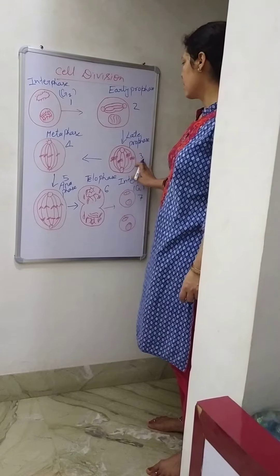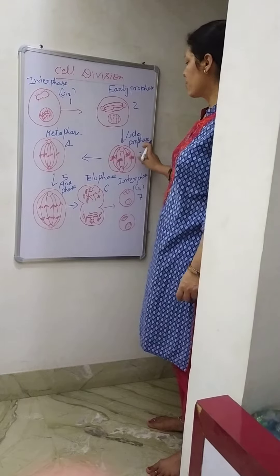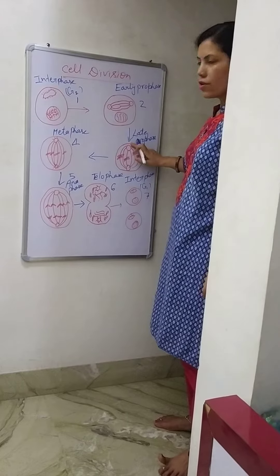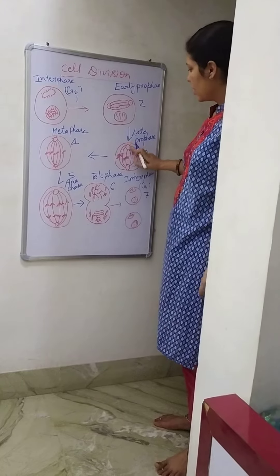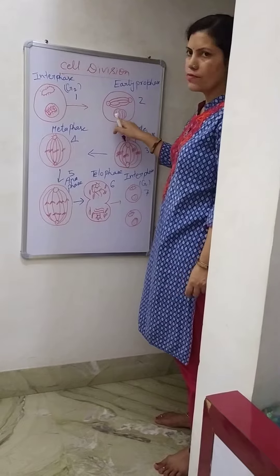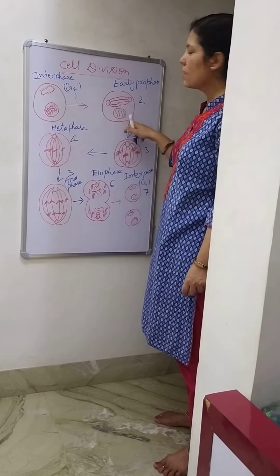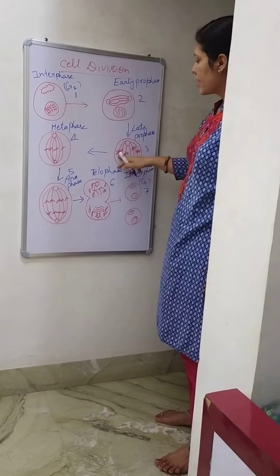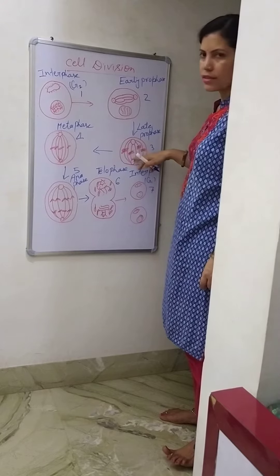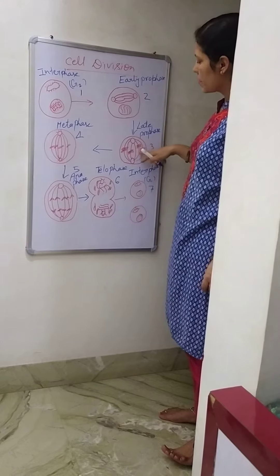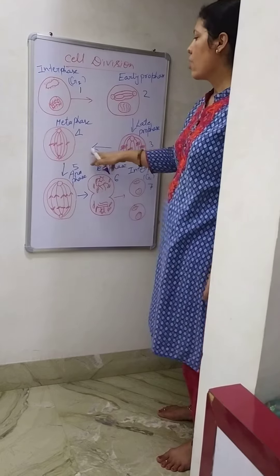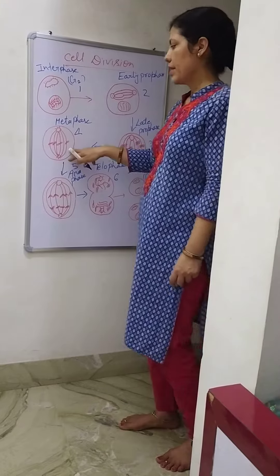This is the third stage, late prophase. Centrioles come on the corner of the cell and these are spindles. Now these chromosomes free from the nucleus and set on these spindle threads. This is late prophase.